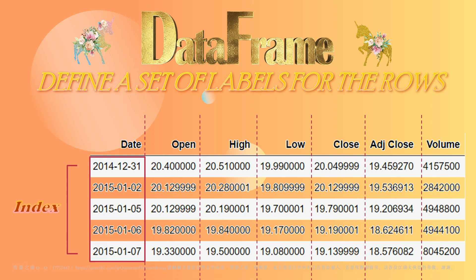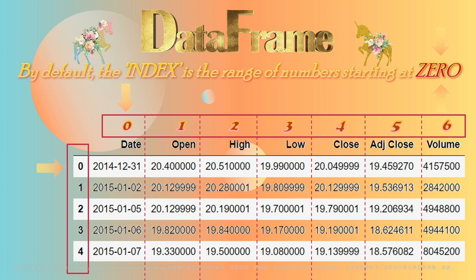We can access the rows by the index. Pandas allows you to define a label for the rows, which we call an index. The terminology here can get a little bit confusing. Commonly, people will call the integer location an index. To clarify, I will refer to the integer locations for the rows and columns as the integer location. It is a little confusing because of how pandas creates an index by default. If you don't explicitly define an index when you create your DataFrame, then by default pandas will create an index.